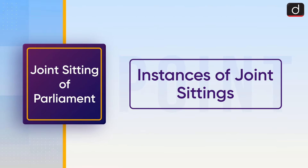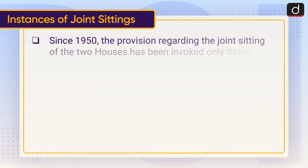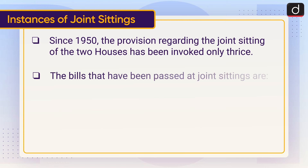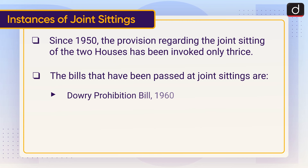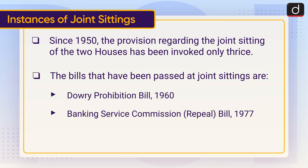Regarding instances of joint sittings — since 1950, the provision regarding the joint sitting of the two houses has been invoked only thrice. The bills that have been passed at joint sittings are: the Dowry Prohibition Bill 1960, the Banking Service Commission Repeal Bill 1977, and the Prevention of Terrorism Bill 2002.